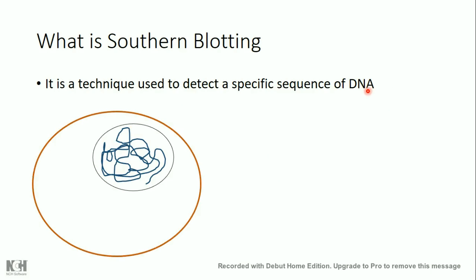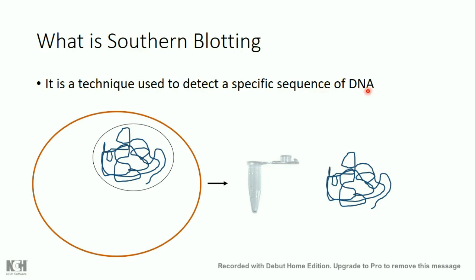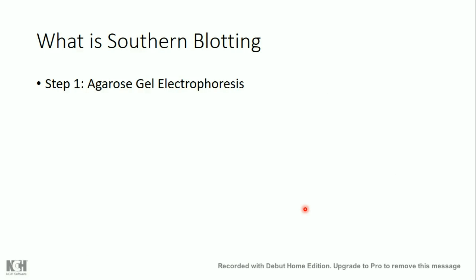Let's say I have a cell — eukaryotic or even prokaryotic — and I extract the genome from this cell, so I have a genome sample. I'm interested in searching for a specific sequence in this genome, maybe a specific gene. What I should do first is perform agarose gel electrophoresis. There is a previous video in my channel about agarose gel electrophoresis, so I recommend you go watch it.